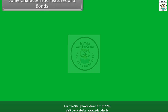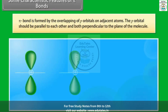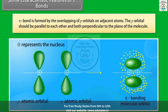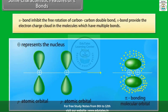Some characteristic features of pi bonds: Pi bond is formed by the overlapping of p-orbitals on adjacent atoms. The p-orbitals should be parallel to each other and both perpendicular to the plane of the molecule. Pi bond inhibits the free rotation of the carbon-carbon double bond. Pi bond provides the electron charge cloud in molecules which have multiple bonds.